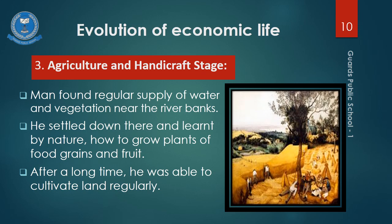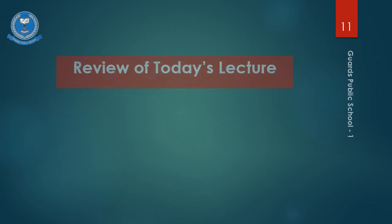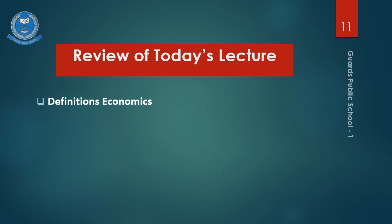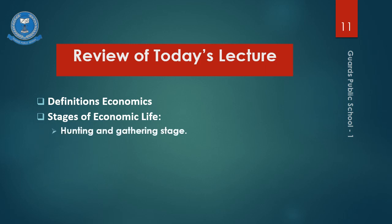Okay students, inshallah in next class we will discuss these new concepts. Now review of today's lecture. Our first topic was the definition of economics given by two famous economists, that is Professor Marshall and Professor Robbins. Our next topic was evolution of economic life. We learned about the three principal stages of economic life, which are hunting and gathering stage, pastoral stage and agriculture and handicraft stage.